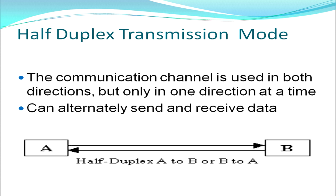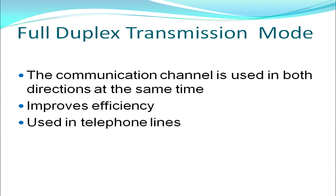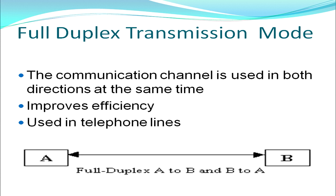Next is the full-duplex transmission mode. It is the best transmission mode used today, as the communication channel is used in both directions at the same time, saving a lot of time and improving network efficiency. Our telephone lines majorly use full-duplex transmission mode, where a single telephone line is used for sending and receiving data simultaneously.